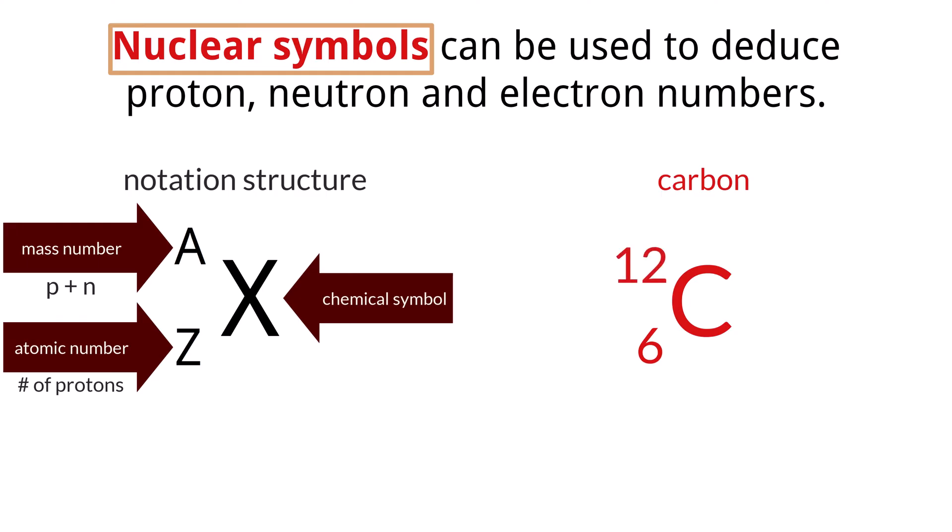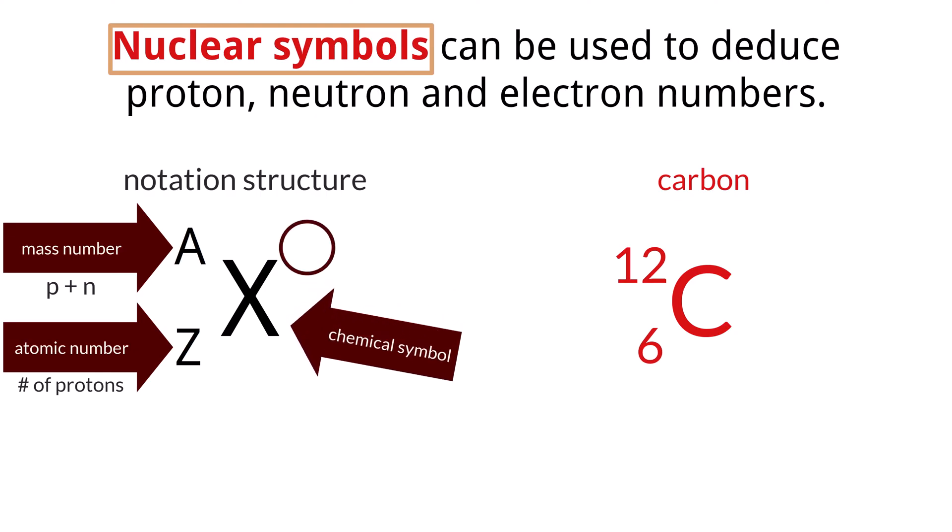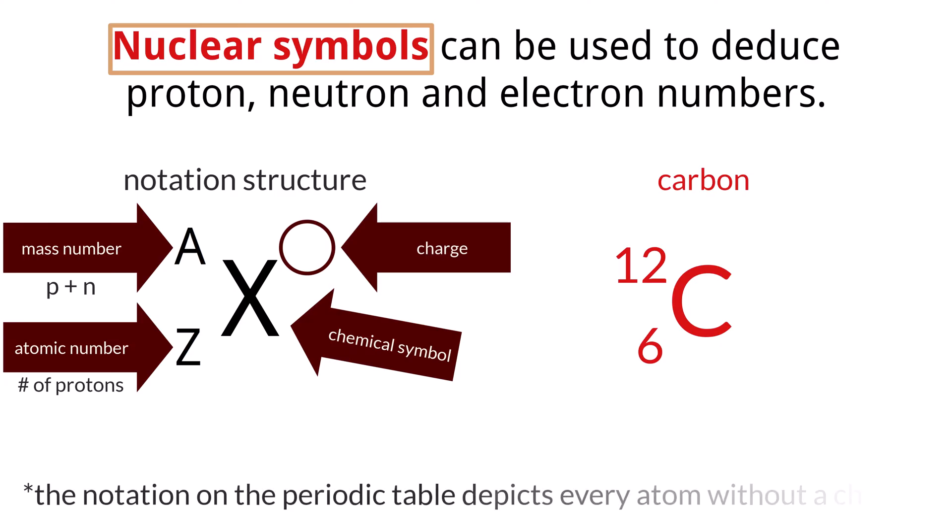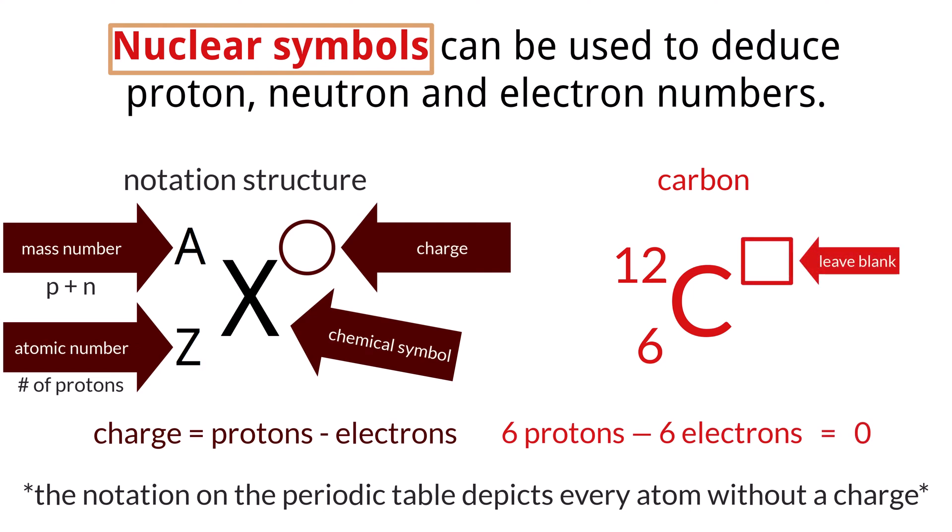The last part of the notation is a superscript to the right side of the chemical symbol, which notes the charge of the atom. But not every atom has a charge, meaning they have an overall net charge of zero, and in that case this part is left blank. You can determine the overall charge of an atom by subtracting the number of electrons from the number of protons. So in our example here with carbon, we have six protons minus six electrons, which would give us an overall charge of zero that we do not write. But in a hypothetical situation, if a carbon atom were to gain an electron, we would do six protons minus seven electrons, which would give it an overall charge of minus one.